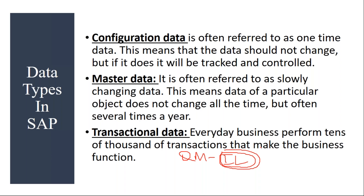Inspection lots can either be created manually by users or they get created automatically. Whenever they want to do quality inspection for a material, they have to have the inspection lot. In the MM module, they create purchase orders to purchase a material — that is transactional data. In PP — the Production Planning module — they create production orders every day to manufacture a product. That is also transactional data. Transactional data is day-to-day business data normally created by end users.